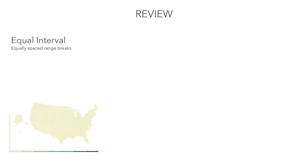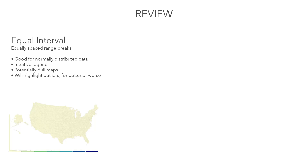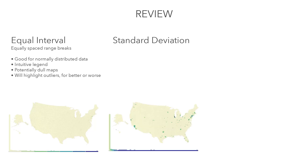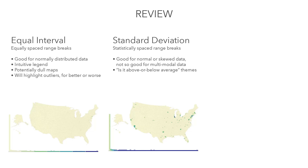In summary: equal interval gives you equally spaced range breaks. It's good for normally distributed data; everything else is who knows. It'll have an intuitive legend, but you might have potentially dull maps — though that might be the nature of the reality. Outliers will dominate an equal interval map, for better or worse. Standard deviation gives you statistically spaced range breaks. It's good for normal or skewed data but not great for multimodal data. It gives you a useful above-or-below-average map and reliably okay-looking maps, but communicating standard deviations from a mean can be complicated, so make sure you have a nice clear legend.